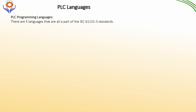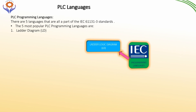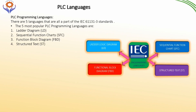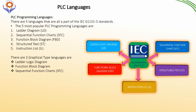Now we will move to the software section for PLCs. What is PLC language and what types of PLC languages are used for programming? There are five different languages as per IEC 61131-3 standards: ladder logic, sequential function chart, function block diagram, structured text, and instruction list. Of these five, three are graphical type languages — ladder logic diagram, function block diagram, and sequential function chart — and two are text-based languages: structured text and instruction list.